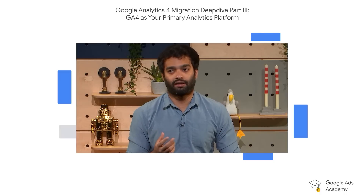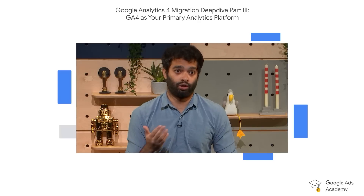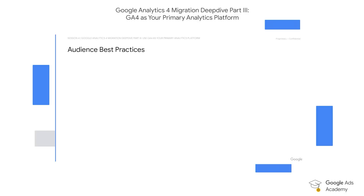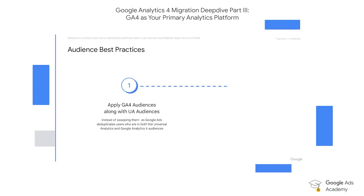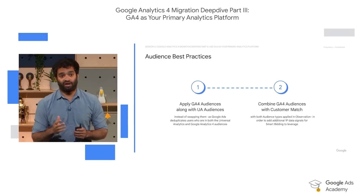In addition to the best practices for smart bidding, there are also best practices for audience migration — replacing older audiences set up in Universal Analytics with newer audiences set up in GA4. Unlike for conversion actions, it is absolutely fine to apply GA4 audiences along with Universal Analytics audiences at the same time, as the Google Ads system will be able to deduplicate users who are in both the new GA4 audiences and the old UA audiences. There is no need to manually remove the older audiences set up using UA. As an additional best practice, it's often a good idea to combine GA4 audiences with customer match lists, as this gives the system additional first-party data signals to work with.